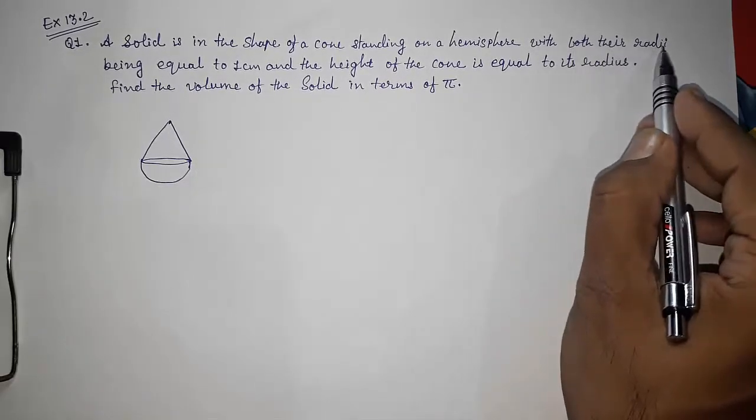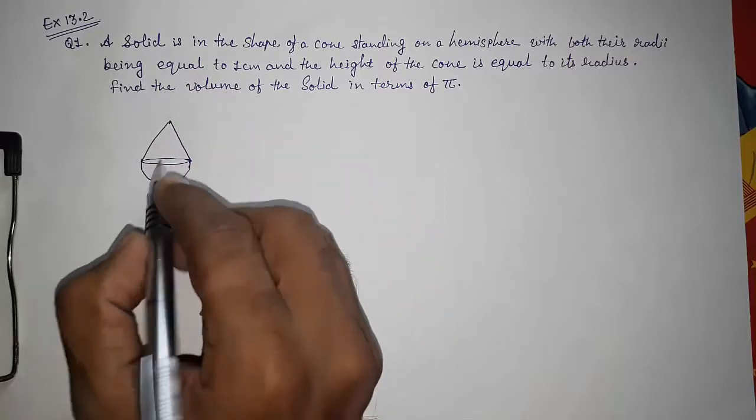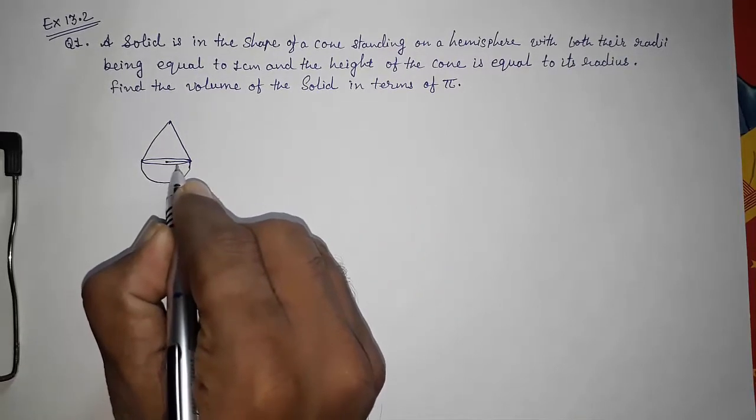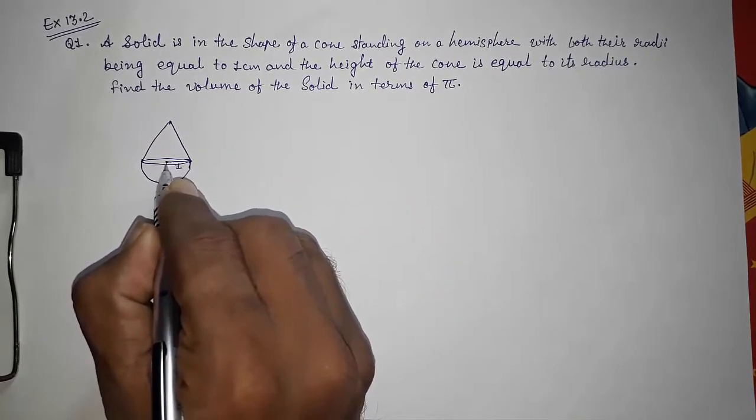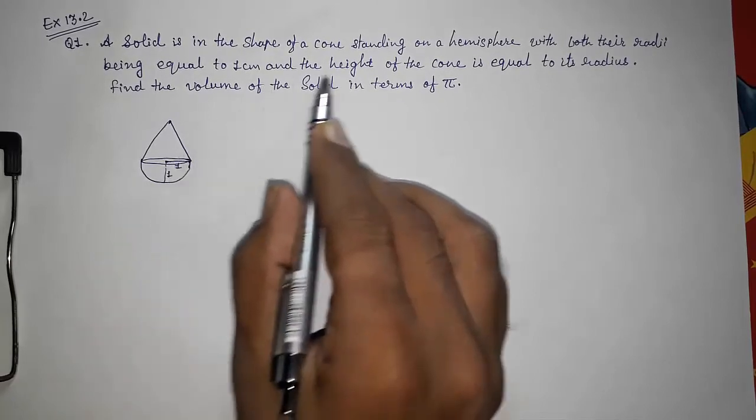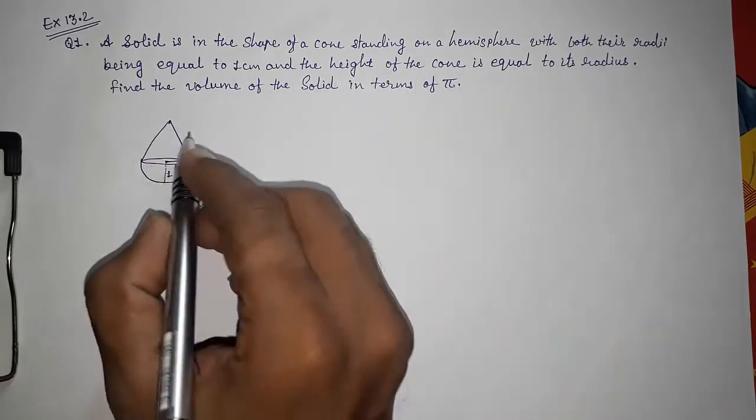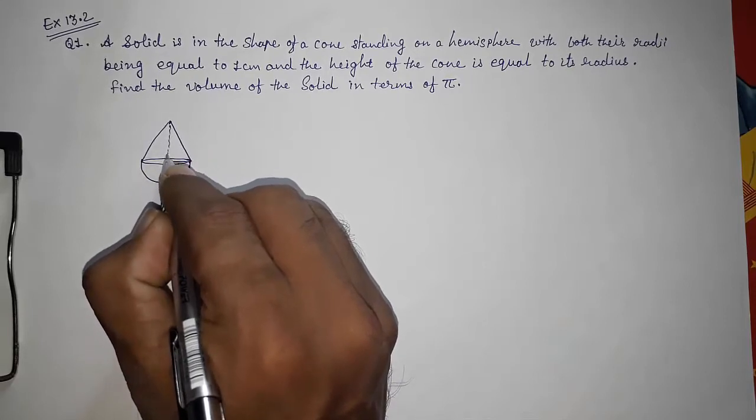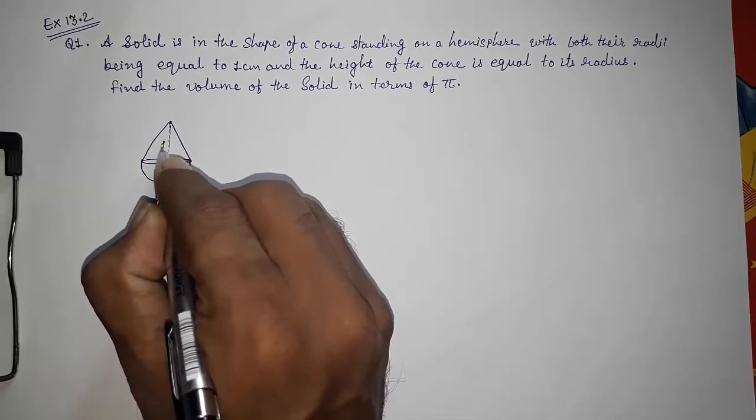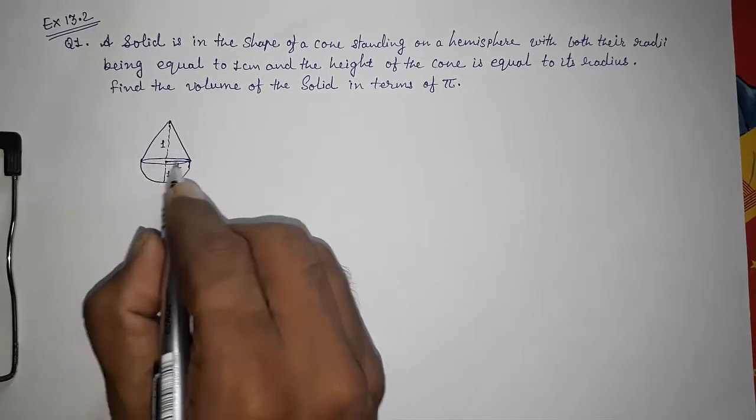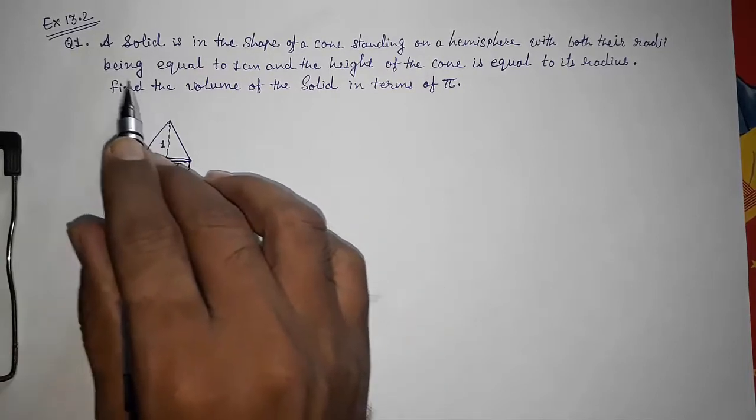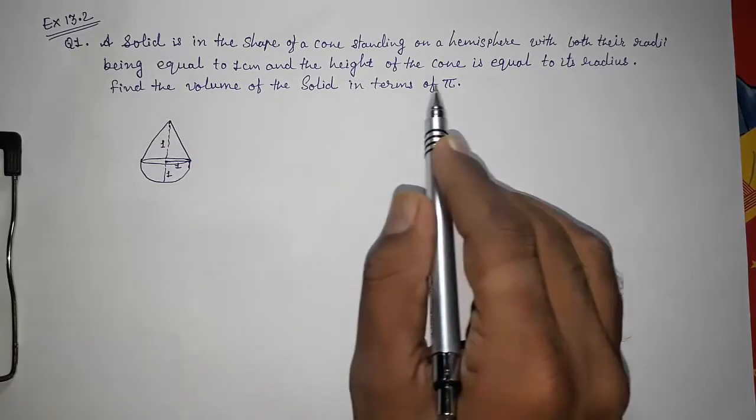With both their radii being equal to 1 cm, so the radius of this is 1 cm. The height of the cone is equal to radius, so this is also 1. So here we are having height also 1, radius also 1.